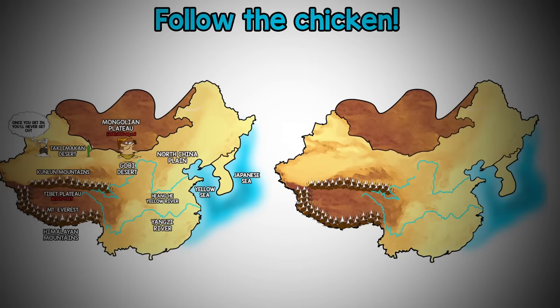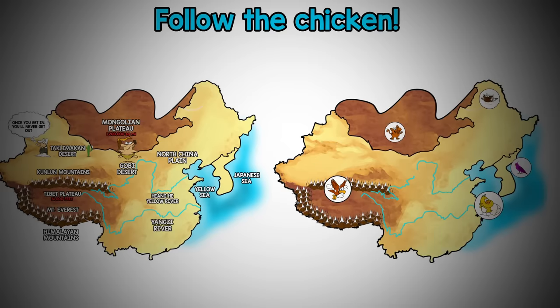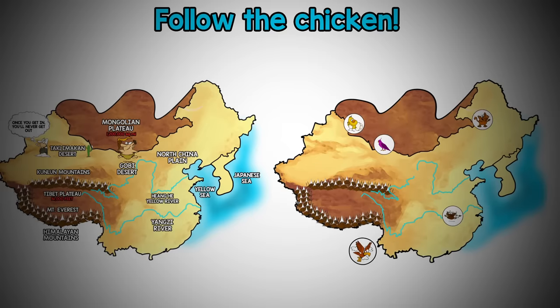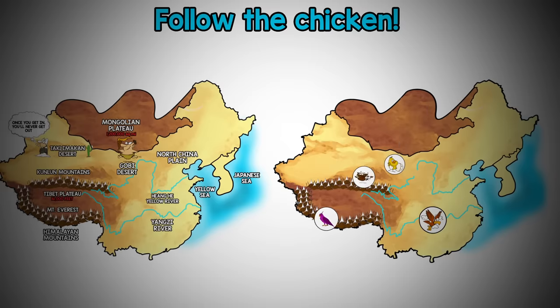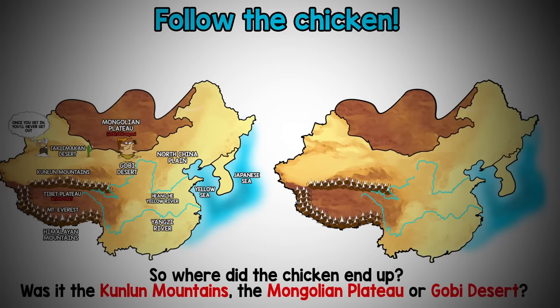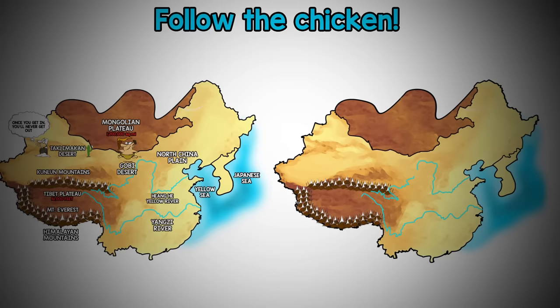Remember to keep your eyes on the chicken. So where did the chicken end up? Was it the Kunlun Mountains, the Mongolian Plateau, or the Gobi Desert? Yep, it was the Gobi Desert. Let's try one last time.